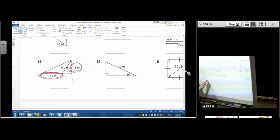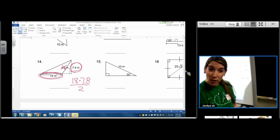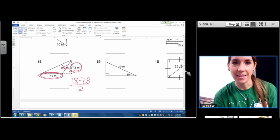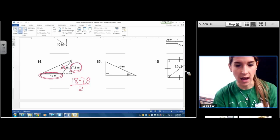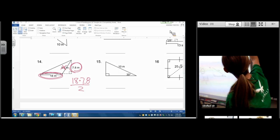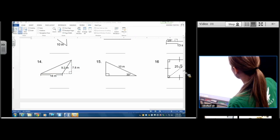Base times height divided by 2. So the side that we're not going to use is the 9.2. That is neither our base nor our height. It is simply a side length. And we don't need that to find the area. So that's 14.